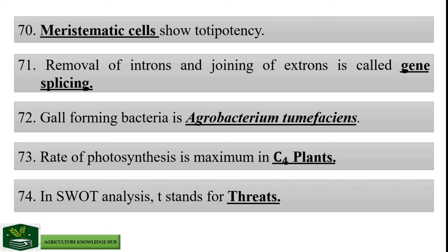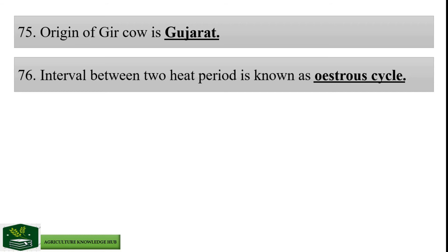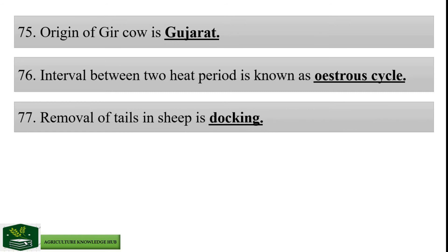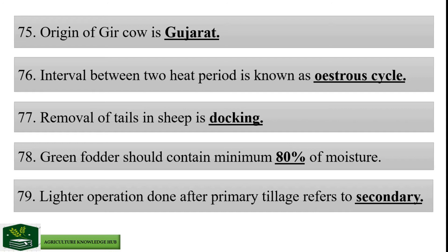Origin of Gir cow is Gujarat state. Interval between two heat periods is known as estrous cycle. Removal of tails in sheep is docking. Green fodder should contain minimum 80% moisture. Lighter operation done after primary tillage refers to secondary tillage.